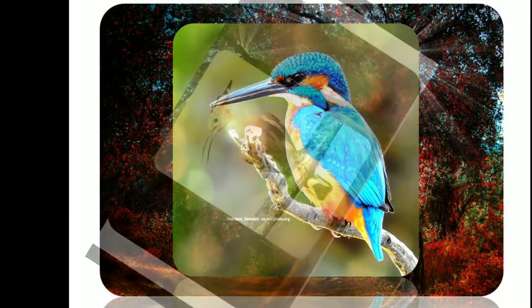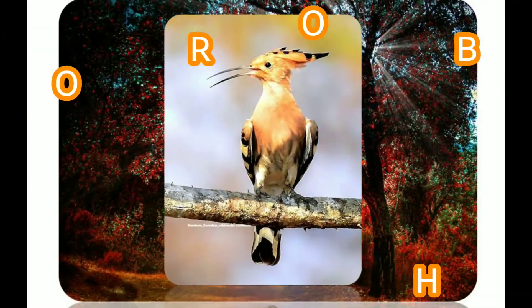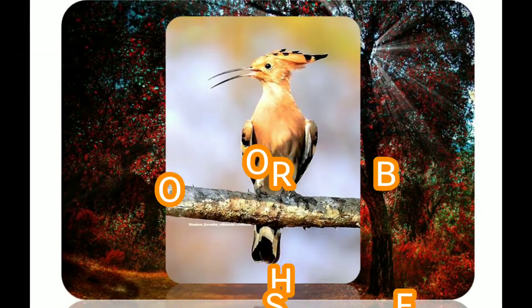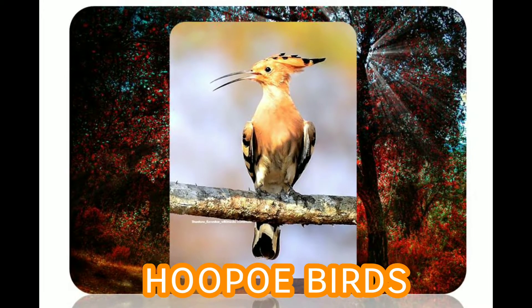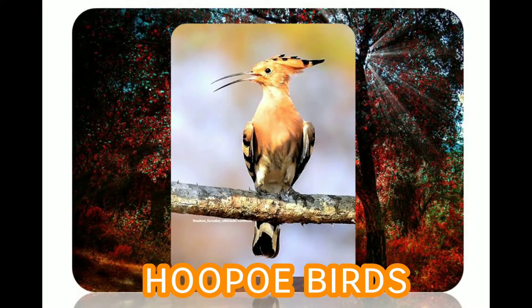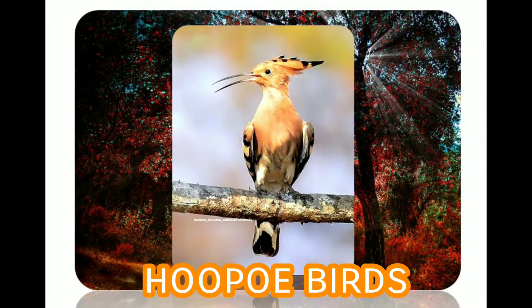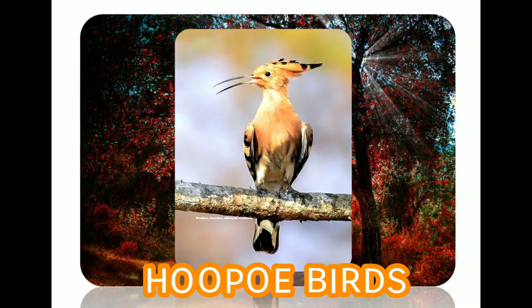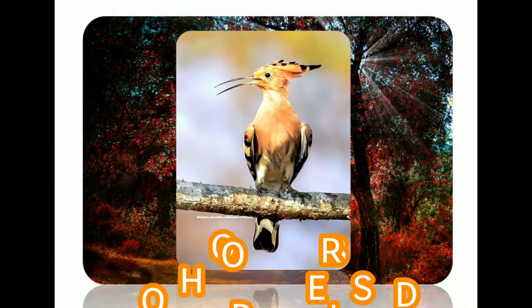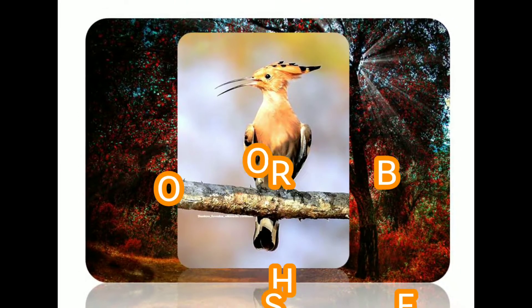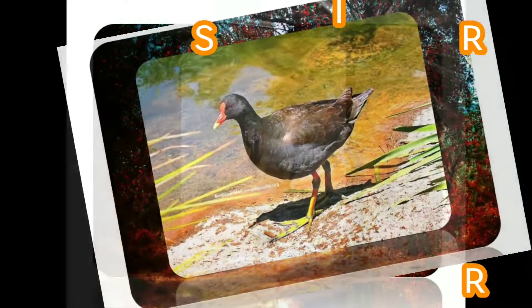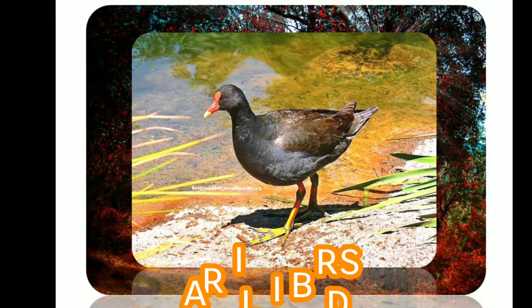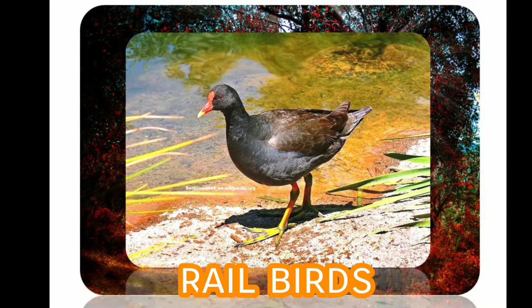Hoopoe birds inhabit a wide range of habitats such as heathland, wooded steppes, savannas, and grasslands, as well as forest glades. The average lifespan of the hoopoe in the wild is 10 years.